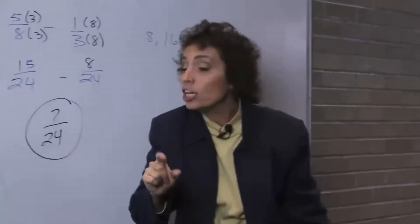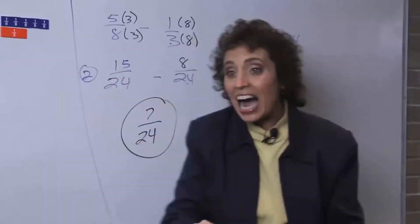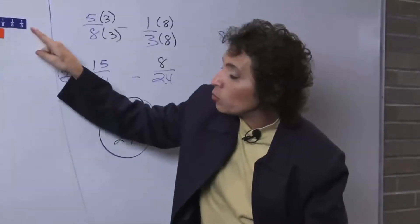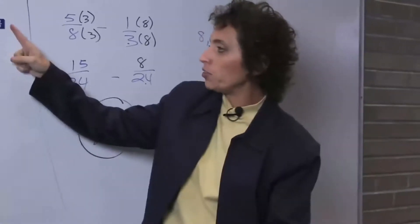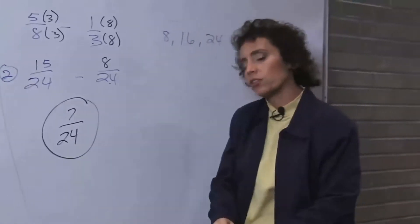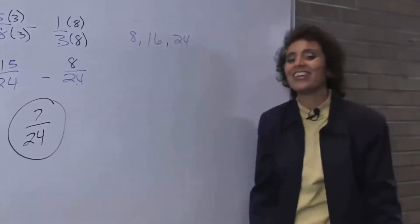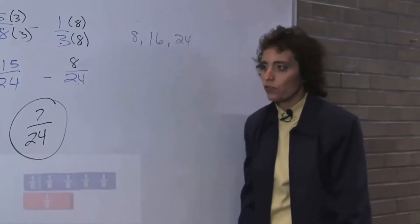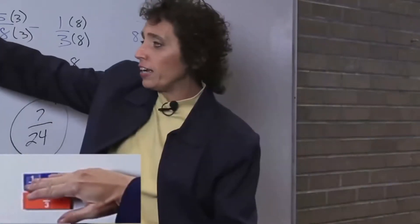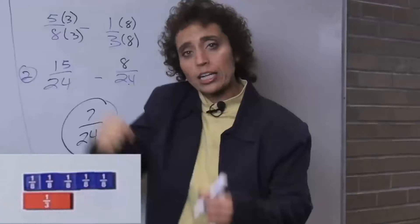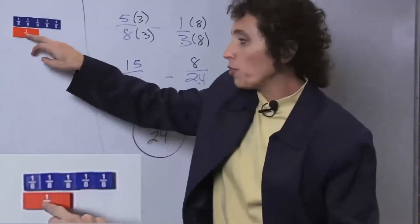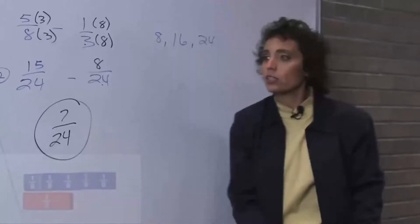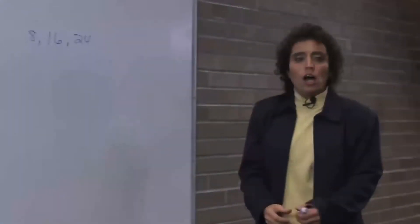Now I have 15 twenty-fourths and I subtract 8 twenty-fourths. So I get 15 minus 8 — 7 twenty-fourths. I had 5 eighths to begin with, then I drove, and now I only have 1 third left. So I subtract that to see the difference — that's how much I used. 7 twenty-fourths.